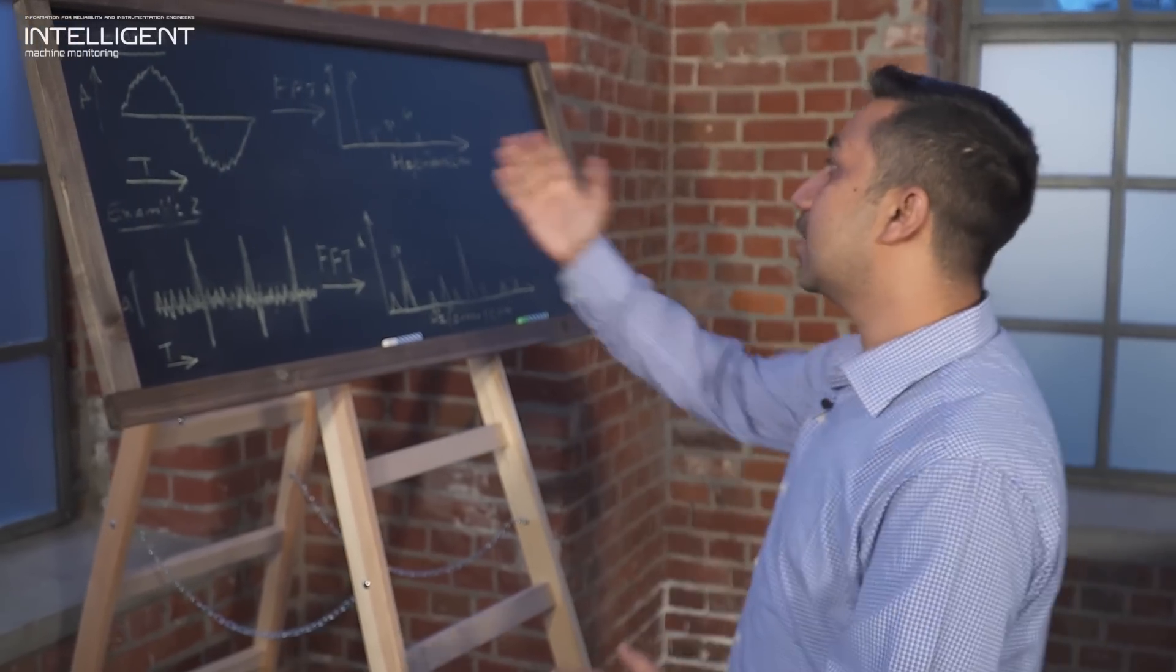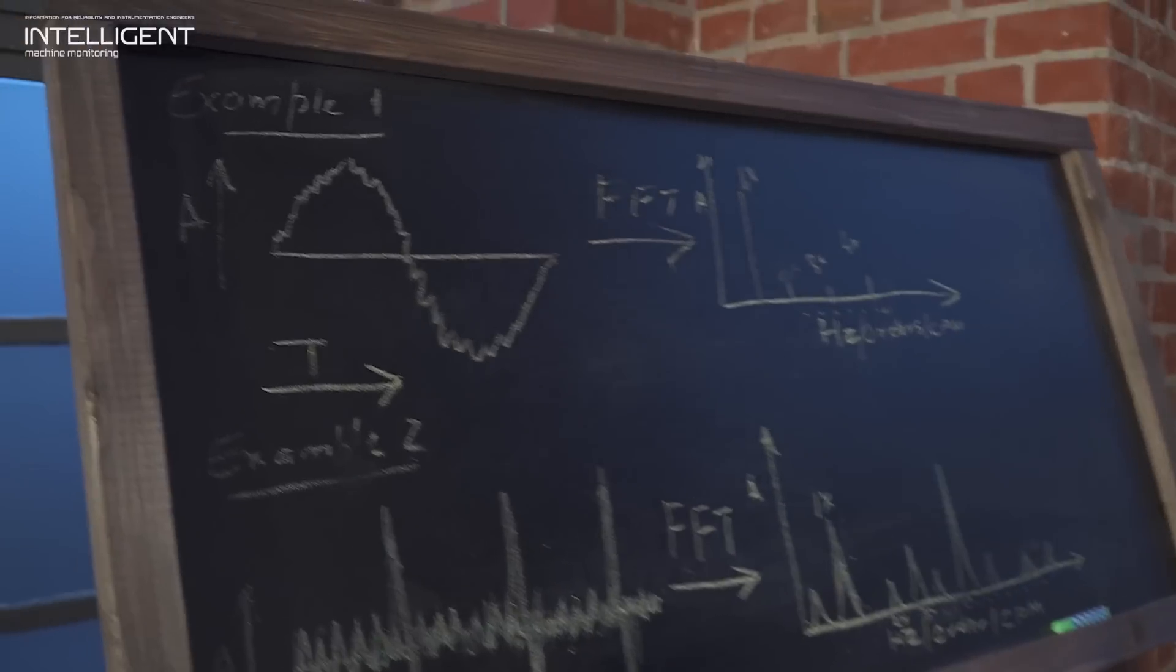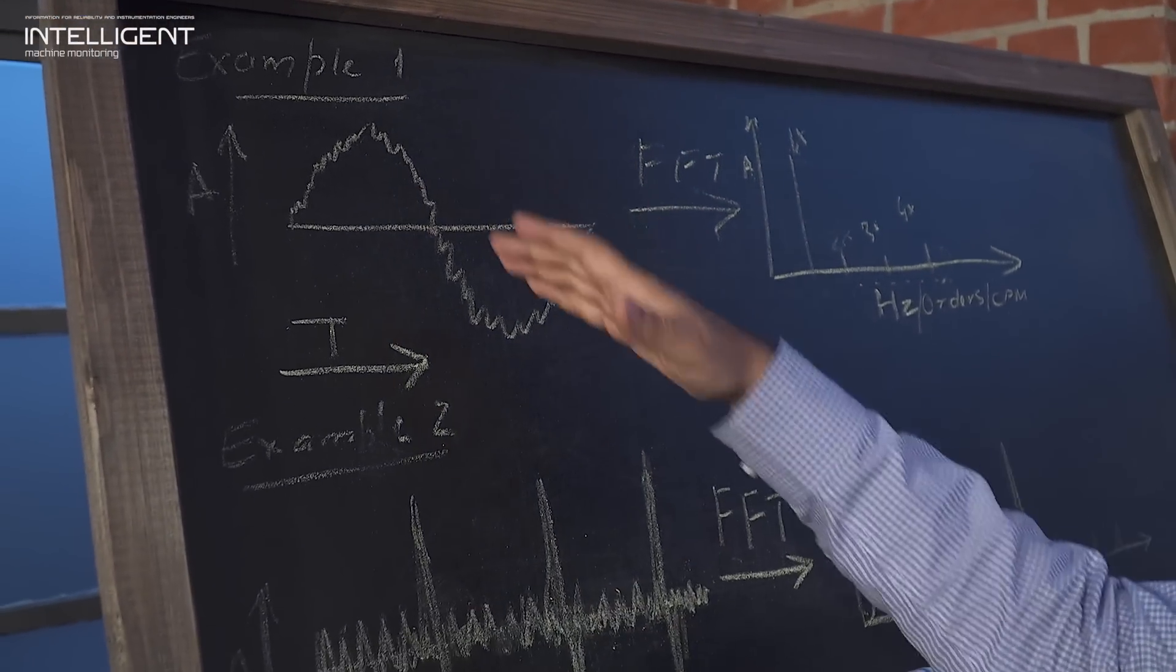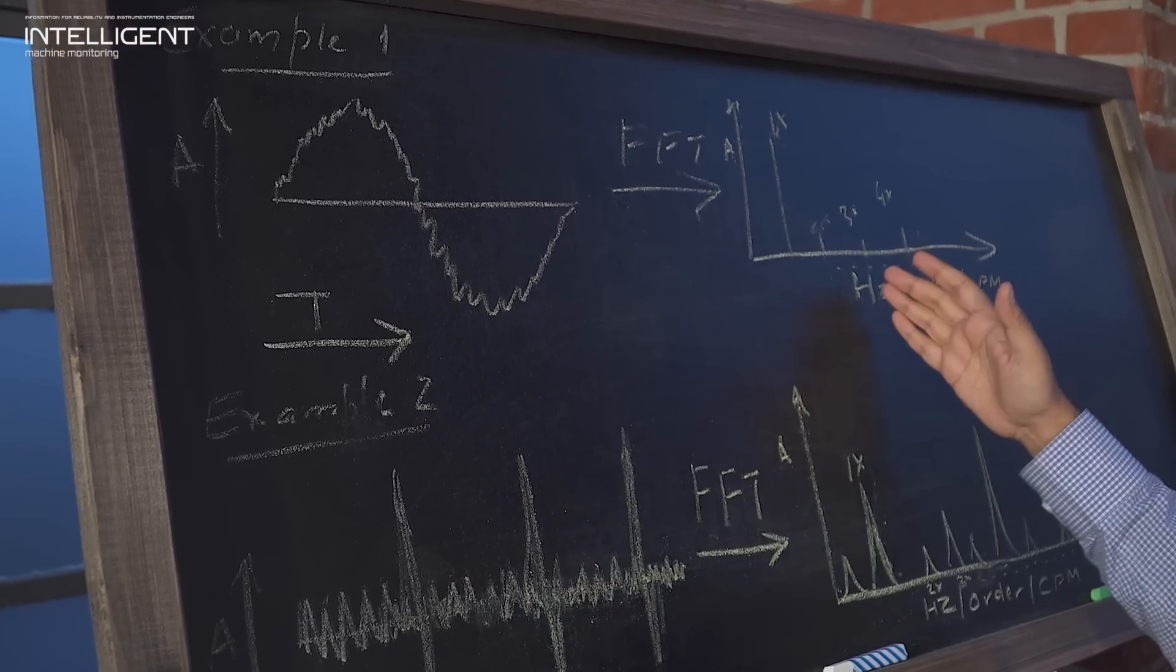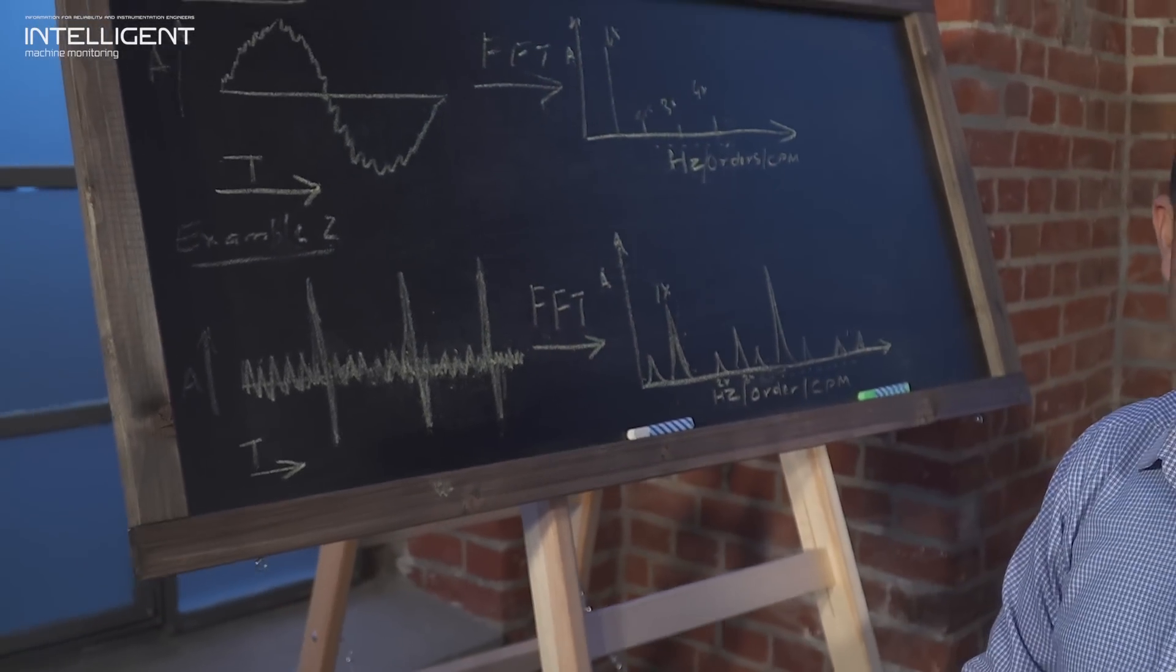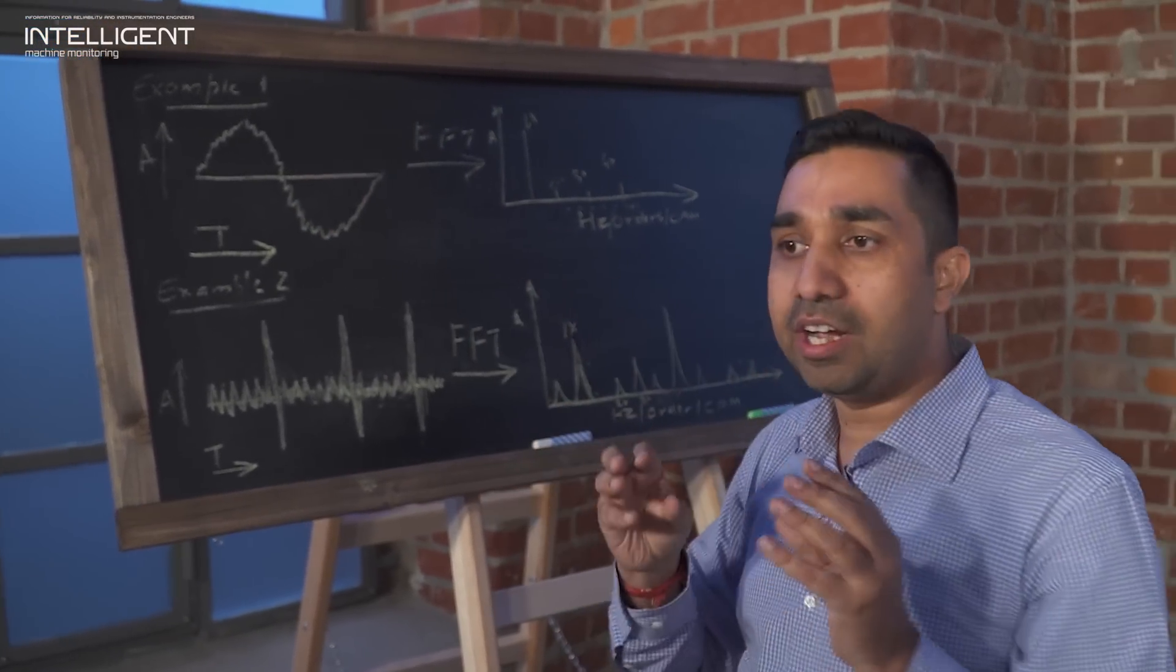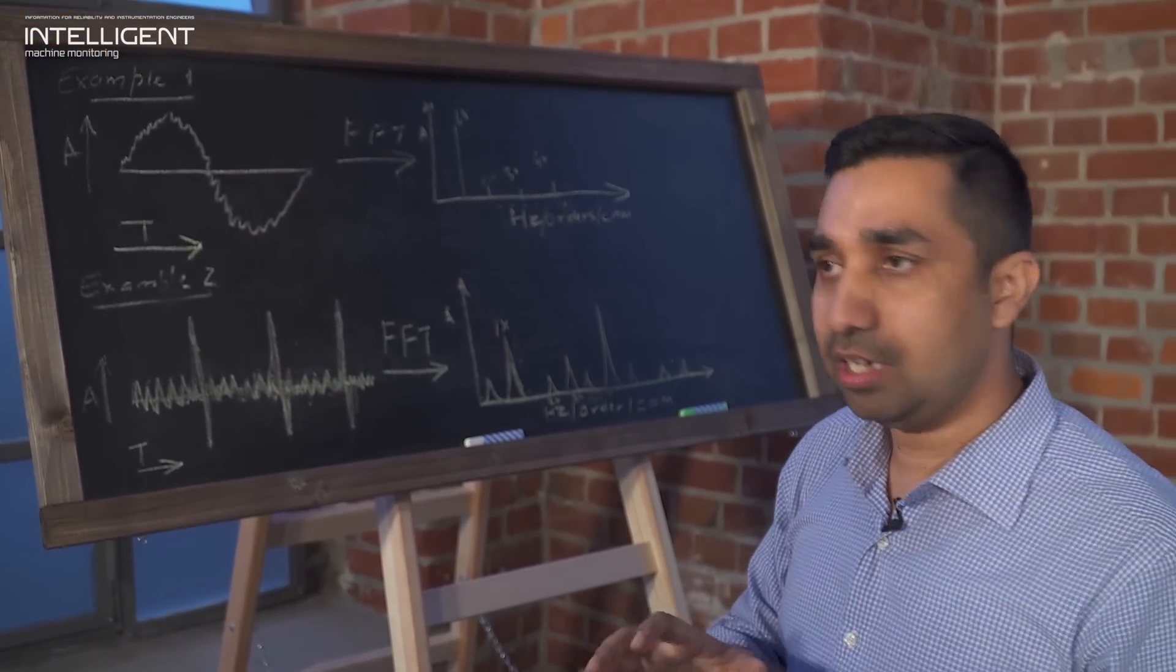To validate this statement, I will take two examples. The first example is a machine that is out of balance. The time signal looks very sinusoidal and FFT has a dominant 1x turning speed frequency. In this case, both these plots give you a hint of unbalance.